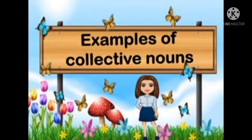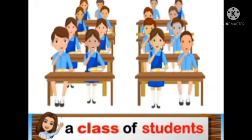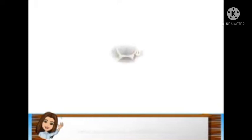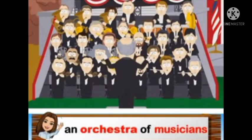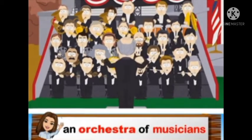Now we have to check some more examples of collective nouns. The first one: a class of students. Here, class is a collective noun to refer a group of students. Next one: an orchestra of musicians. Here, orchestra is a collective noun — it refers a group of musicians.